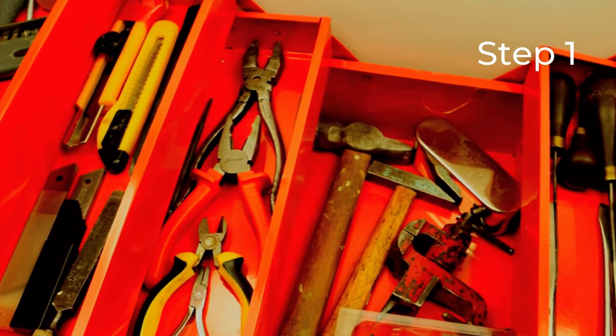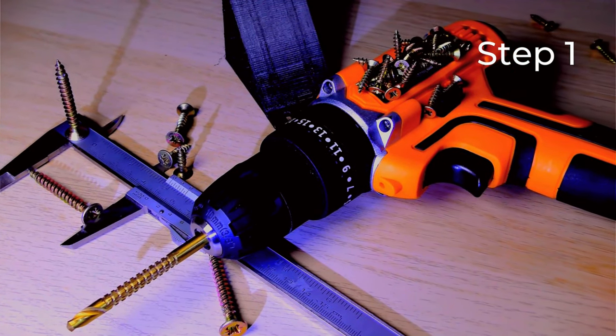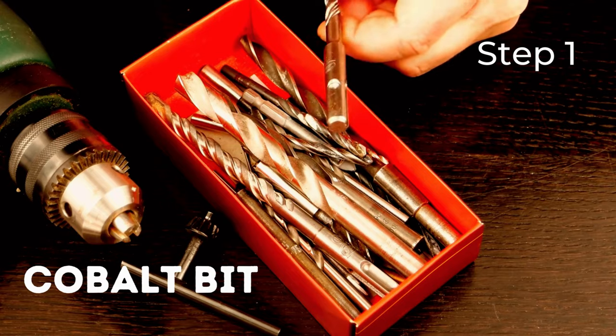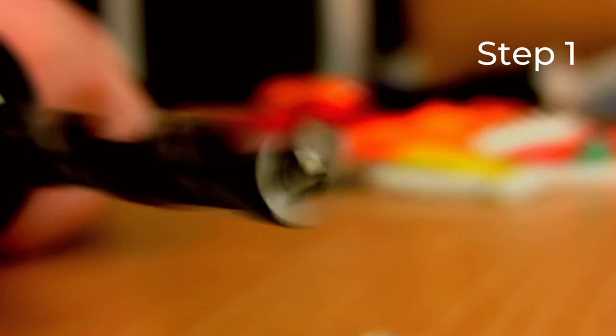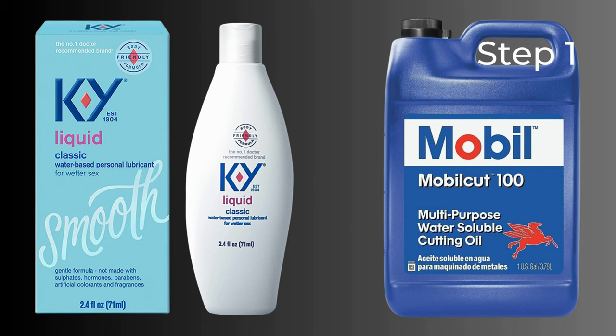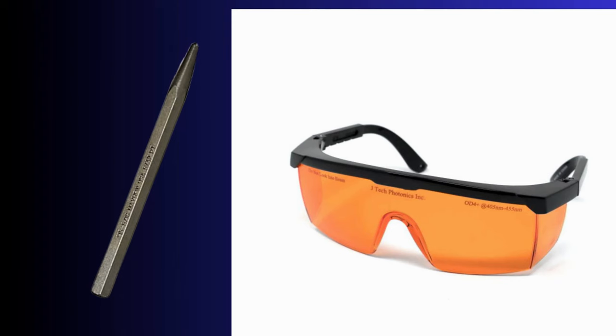Step 1, Gather your tools. You'll need a powerful drill, high-quality cobalt or tungsten carbide bits specifically designed for drilling stainless steel, cutting oil or lubricant, a center punch, and safety glasses.